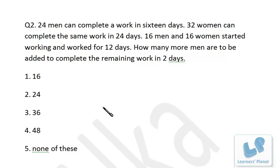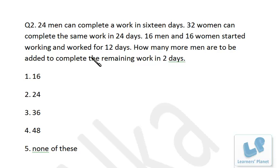Right, now: 24 men can complete a work in 16 days; 32 women can complete the same work in 24 days. Then 16 men and 16 women started the work. That's the story. Now we start from the first sentence.